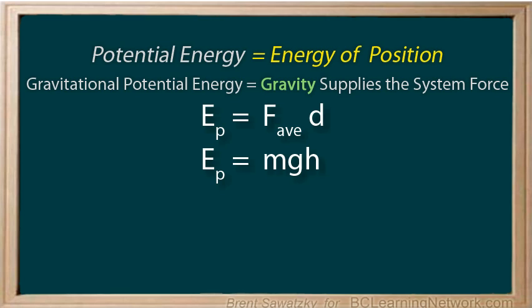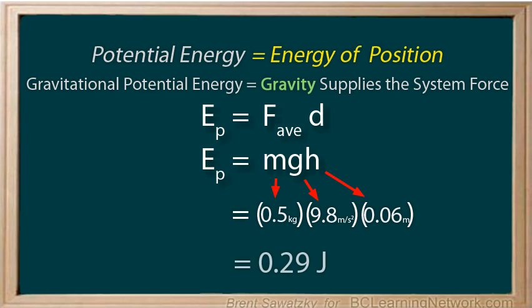So if we're ever asked to calculate the gravitational potential energy of an object, we do four steps. First, we write down the equation being used, Ep equals mgh. Then, we write the equation again, but we replace the variables with brackets. And we put the appropriate numbers into those brackets, ensuring that the values are in standard units, then we can calculate the answer, ensuring that we show our final units of joules.